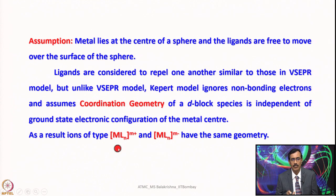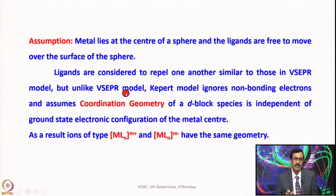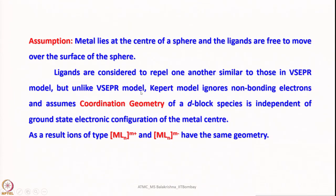As a result, ions of the type MLn — whether cationic or anionic — if the number of ligands is the same, are predicted to have the same geometry. However, we know this cannot be accepted because most complexes' geometry, reactivity, and properties depend on electronic configuration, oxidation state, and many other factors. As a result, the Kepert model for applying VSEPR theory did not work well.